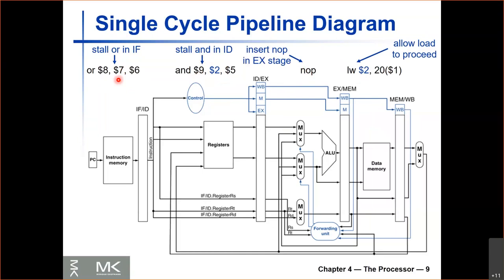The reason this works is that on the next cycle, the load instruction will be in write back and the AND instruction will be in execute, and we can forward from the write back stage to the execute stage. So to deal with this load-use data hazard, we need to: let the load instruction proceed, insert a NOP in execute, and stall the OR and AND instructions in the fetch and instruction decode stages.